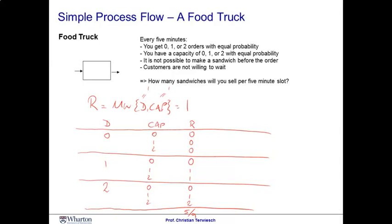People refer to this effect as 'buffer or suffer.' Buffer or suffer means that in a system that is not able to buffer the variability, we will suffer a loss of flow rate. Remember the crucial assumption here: the food truck is not able to make a sandwich before the order occurs, and customers are not willing to wait for it. So we explicitly eliminate inventory — both inventories of waiting customers and inventories of waiting sandwiches. By allowing for inventories, we'll actually be able to have a higher flow rate. Inventory helps us with the flow rate by decoupling the supply and the demand. This is one of the reasons why companies like to have inventory.